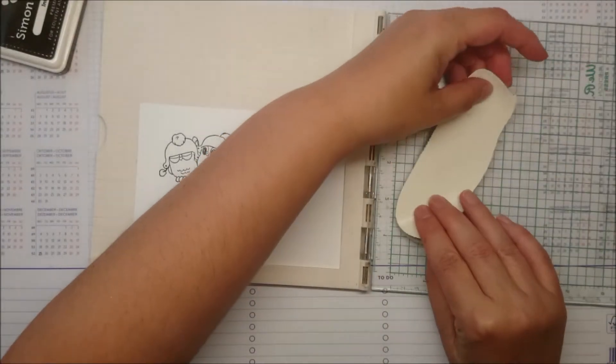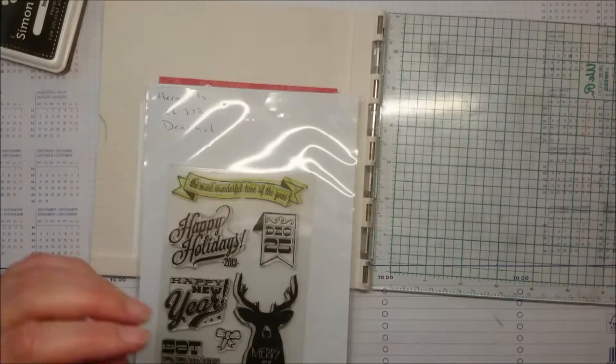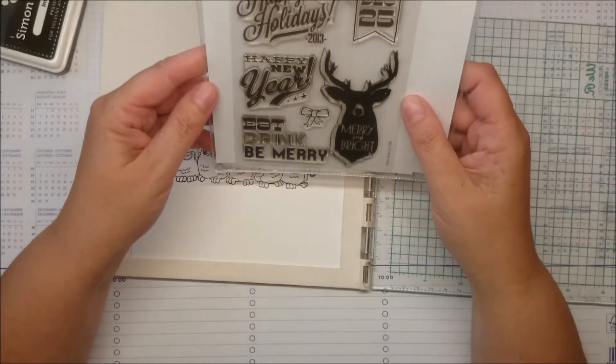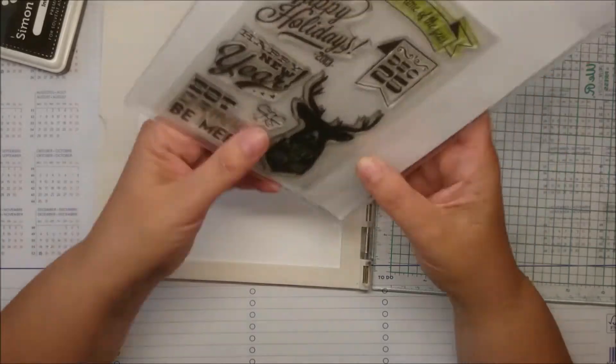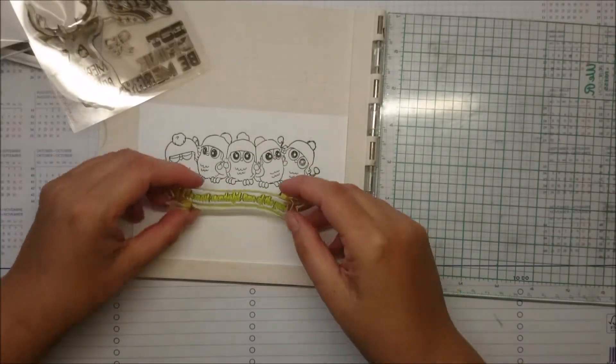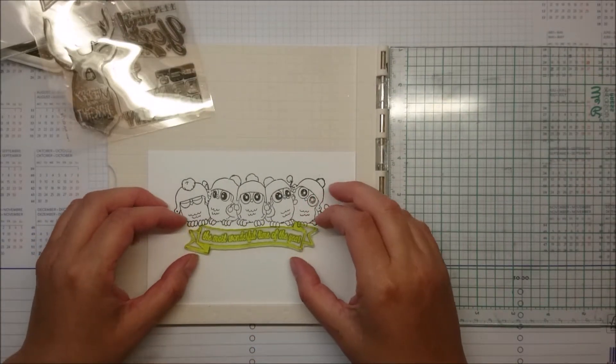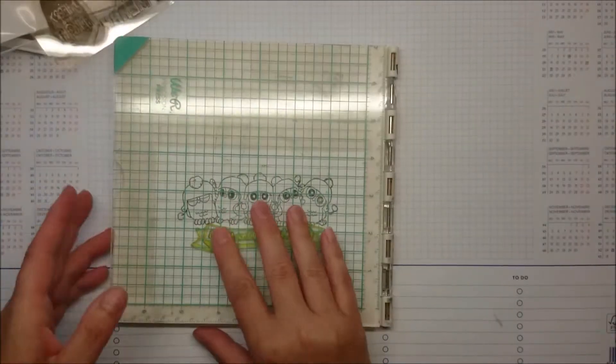So this is cling stamp and the other one is clear stamp. That's why the Memory Keepers Precision Press is so fabulous because you don't need to change anything. And I thought I'm gonna use the banner that says the most wonderful time of the year, and I thought maybe it could look like they are sitting on it or holding it.